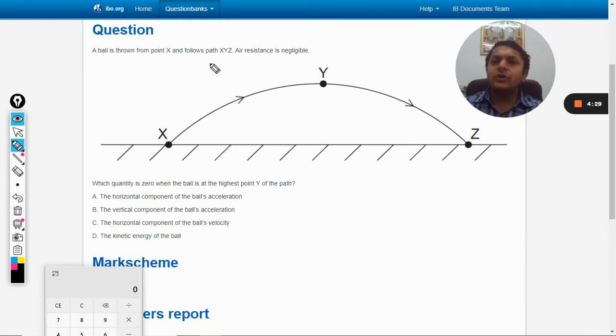Anyways, so this is a simple oblique projectile, air resistance is negligible so it becomes a very ideal case. Which quantity is zero when the ball is at the highest point?